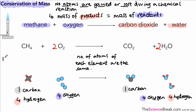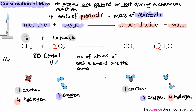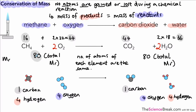We can also verify conservation of mass using relative formula masses. For the reactants: methane is 16, and we have two molecules of oxygen so that's 2 × 32 = 64; total on the left is 80. On the right: carbon dioxide is 44, and two molecules of water is 2 × 18 = 36; total on the right is also 80. These two totals are always the same for a balanced chemical reaction.